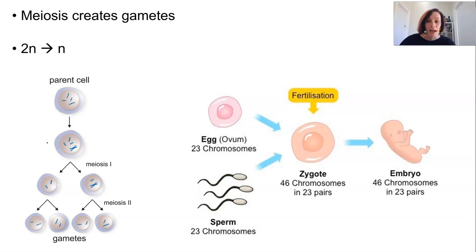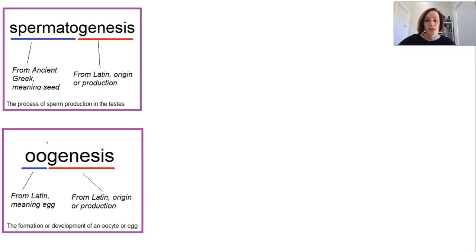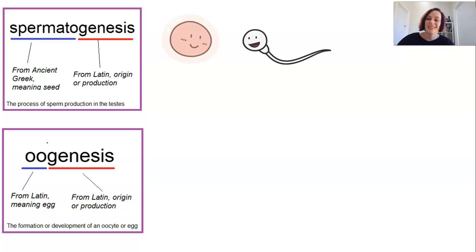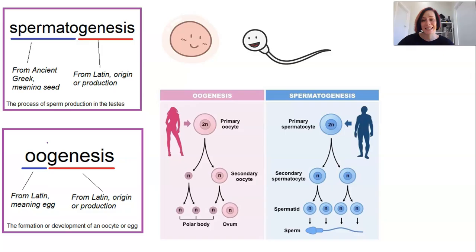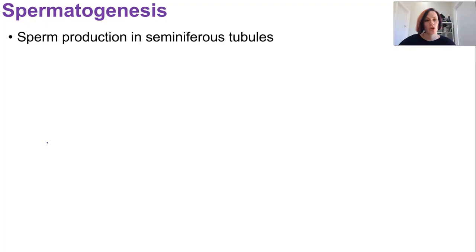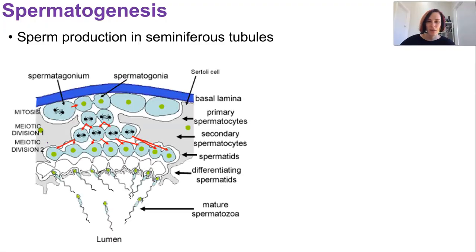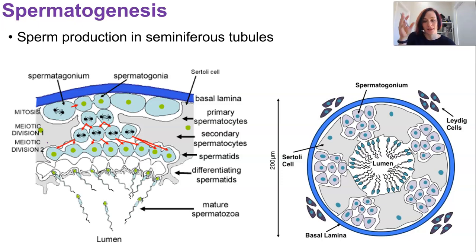Sperm and eggs are the gametes in biologically male and female people respectively. Spermatogenesis and oogenesis are the processes by which sperm and eggs are created, and they absolutely involve meiosis, but they are substantially different processes due to major differences in how the male and female reproductive systems work. Sperm production occurs in the seminiferous tubules, where a stem cell line matures until a sperm cell is able to swim away down the lumen of a tubule.